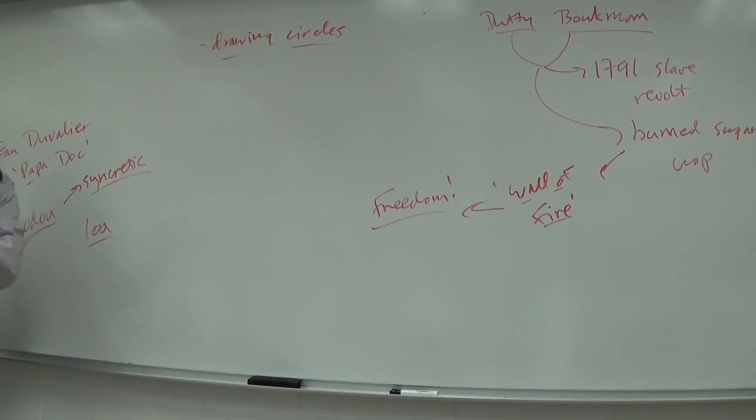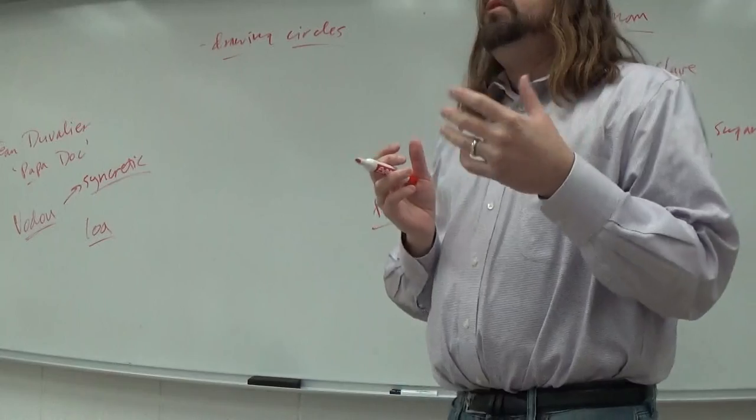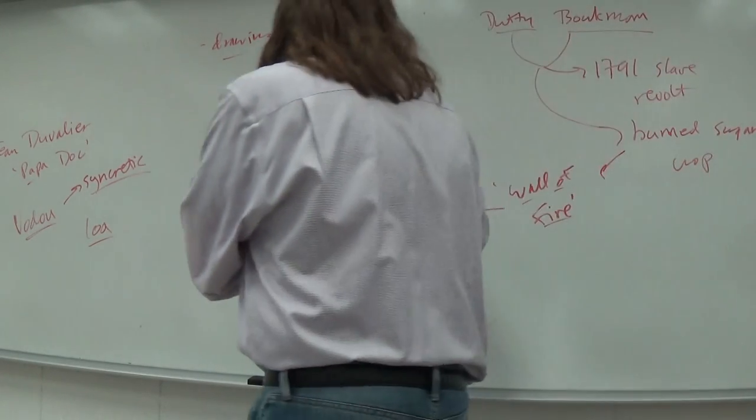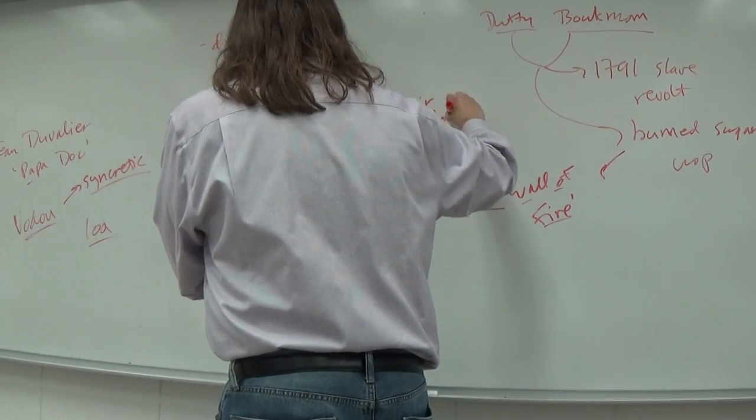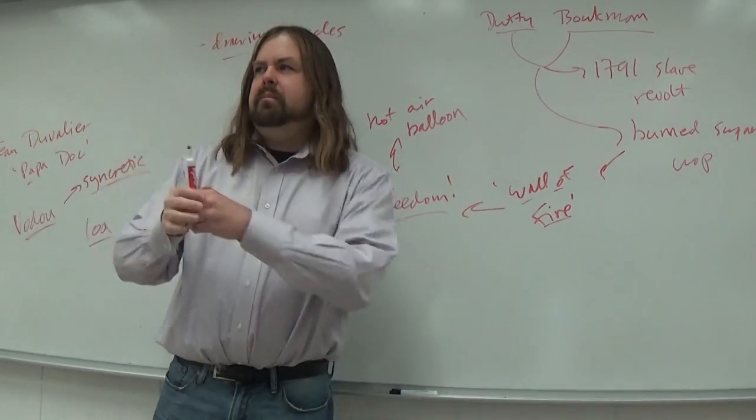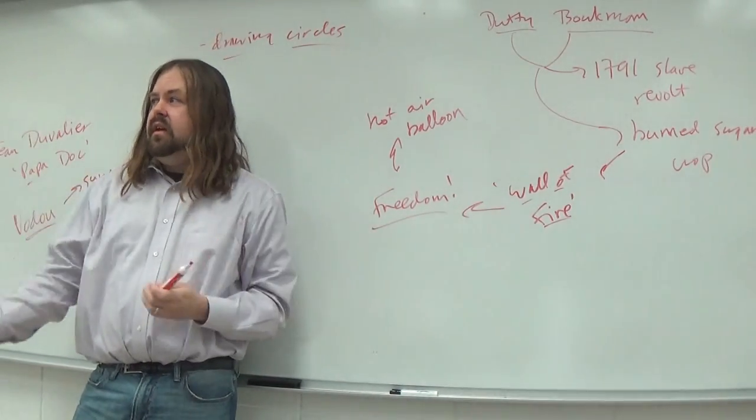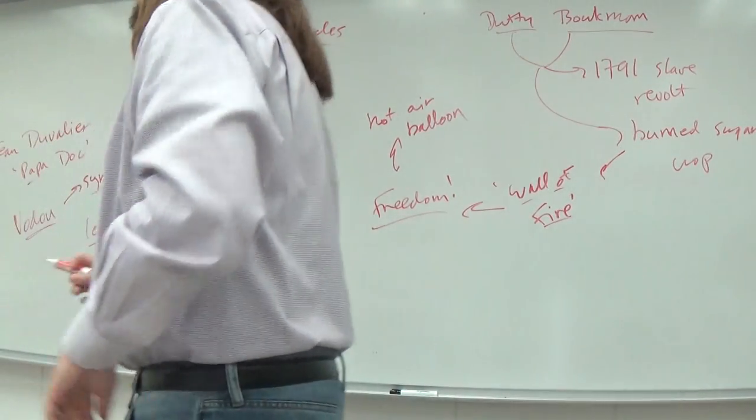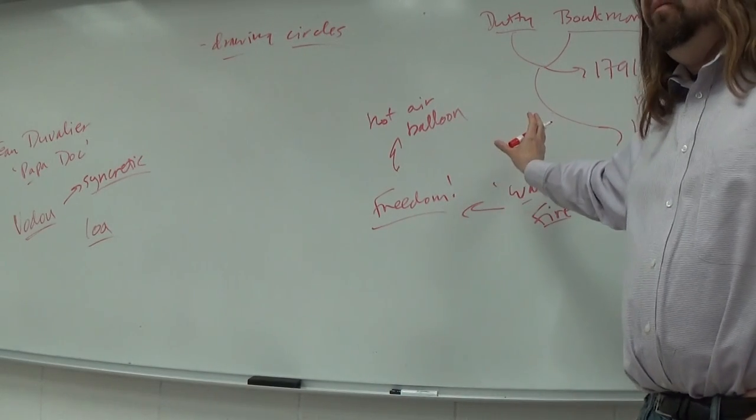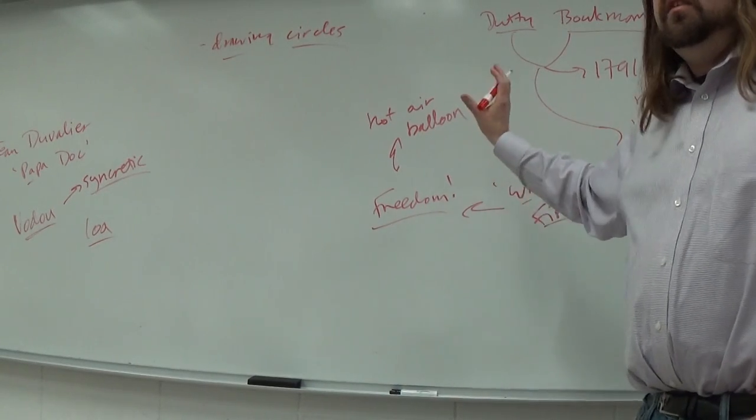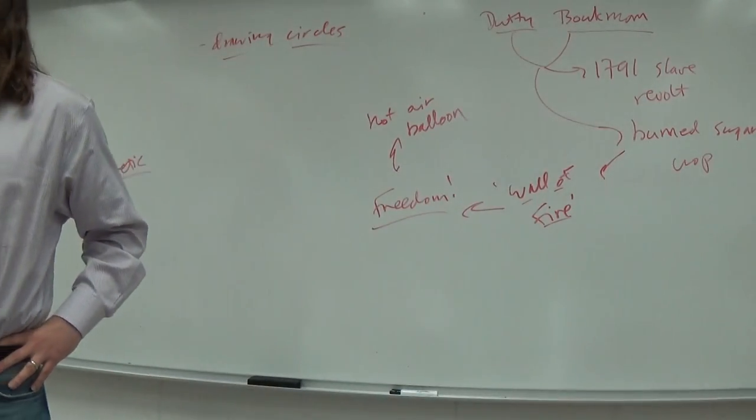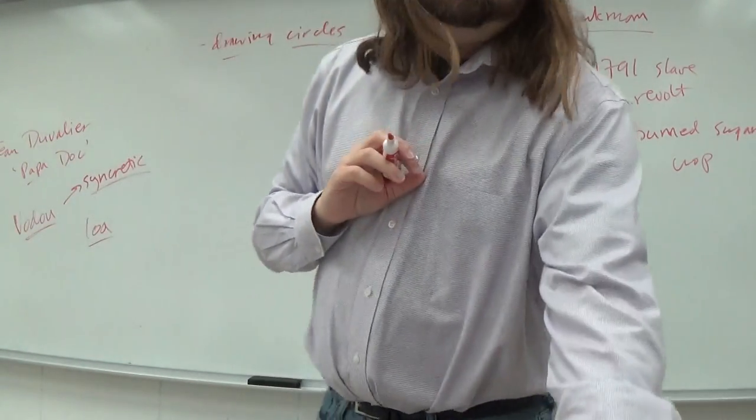So this wall of fire literally represents the burned sugar crop, the destruction of the thing that they're forced to work towards. But it has a symbolic resonance as well. The wall of fire is also the beginning of the revolts, which is supposed to lead to freedom. Now how might this be related to another important image that we see in the story? What else do we see in the story that seems to us to be associated with freedom? Is it the hot air balloon? Yeah. And on what principle does a hot air balloon work? Fire. Fire, yep. You light a fire under a big bag. Big bag inflates. Takes you up.